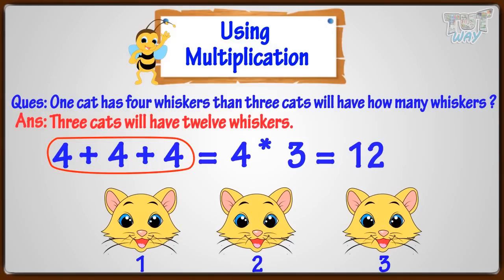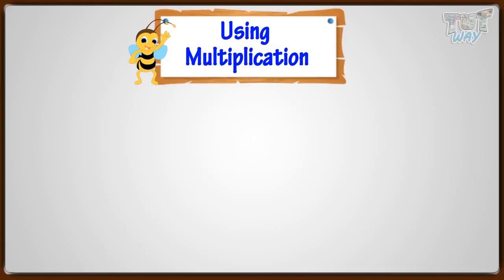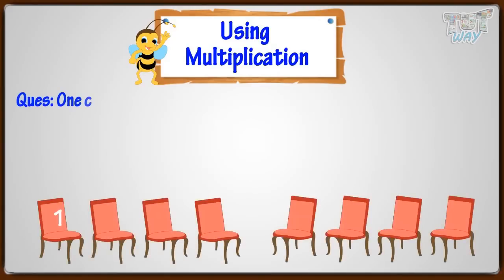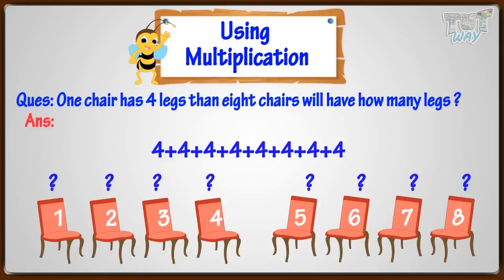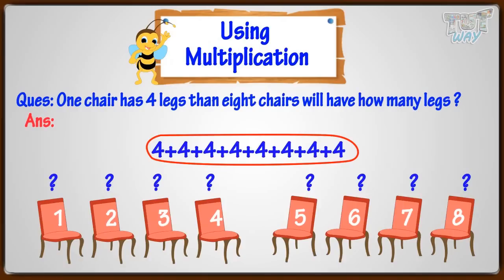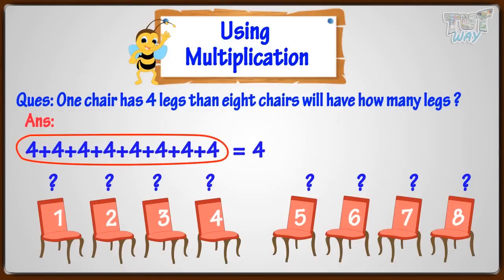Now, let's make one more multiplication sentence. One chair has four legs. Then, eight chairs will have how many legs? Can you make the multiplication sentence for this problem? We need to add the number of legs here. So, it's a problem of repeated addition — adding four eight times. So, we can write it as four times eight, and our multiplication sentence will be four times eight equals thirty-two.